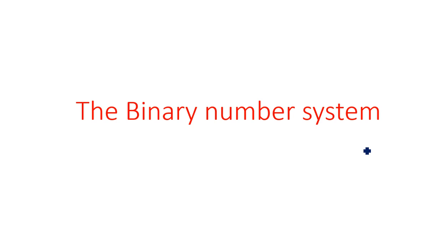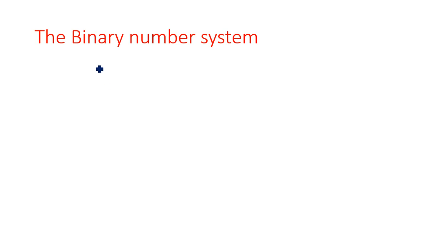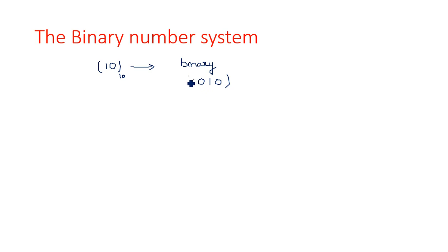In this video I am going to introduce the binary number system. In the previous video I explained the 9th complement, 10th complement, and how to represent a decimal number. This video is especially designed for representing a binary number. For example, if the number 10 is given in decimal, how is it represented in binary format? In binary, 10 is represented as 1010. Binary consists of only two digits: one and zero.